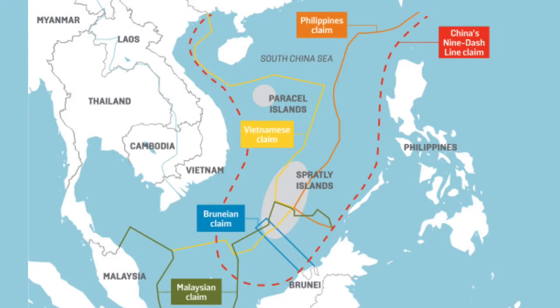The system works much less well in situations where you have multiple countries and complicated borders — for instance, in areas like the South China Sea, where various countries have legitimate overlapping claims, and China has a huge illegitimate claim.